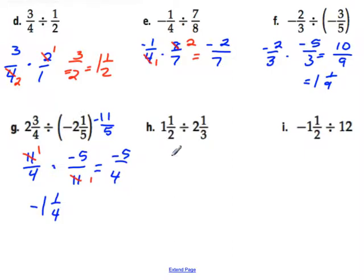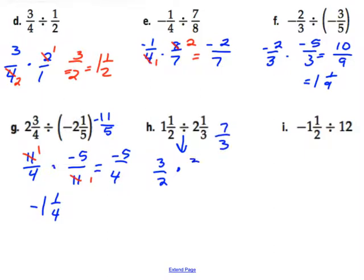Letter H: changing to an improper fraction gives 3 over 2. Change division to multiplication. The other mixed number as an improper fraction is 6 plus 1 equals 7 thirds, so we flip to get 3 sevenths. Nothing to reduce, so multiply across and get 9 fourteenths.